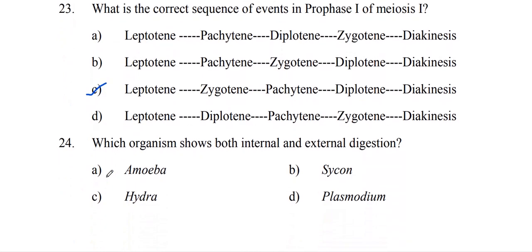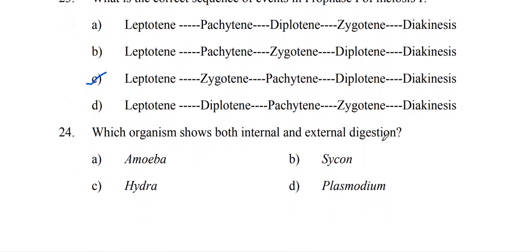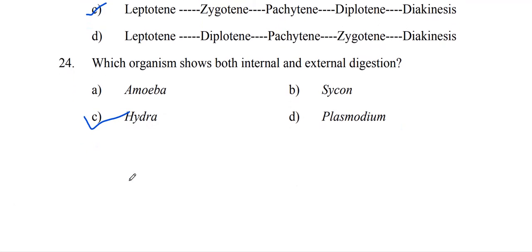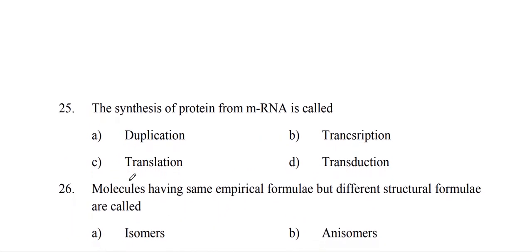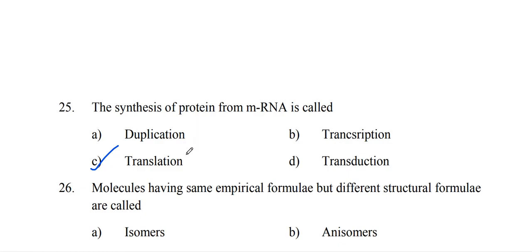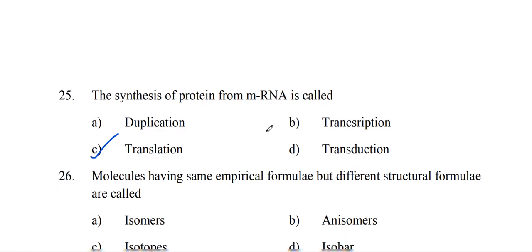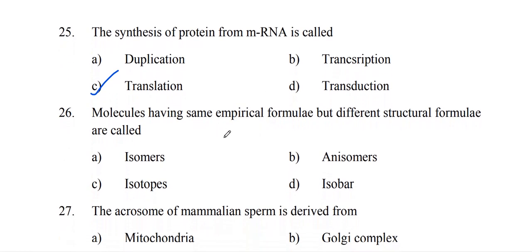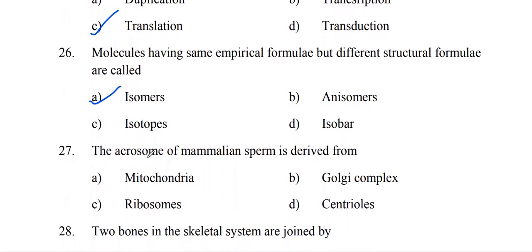The synthesis of protein from mRNA is called translation. The synthesis of mRNA is called transcription. Molecules having the same empirical formula but different structural formulae are called isomers. The acrosome of mammalian sperm is derived from the Golgi complex.